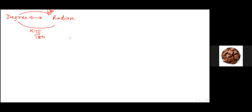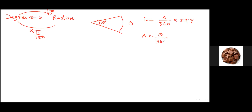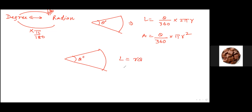The sector formulas: if the angle is in degrees, the arc length is theta over 360 times 2πr, and the area is theta over 360 times πr squared. In radians, the arc length is r times theta, and the area is half times r squared theta. So if you convert from degrees to radians, you can use the simpler radian formulas: L equals r theta, area equals half r squared theta.